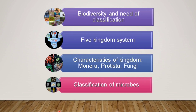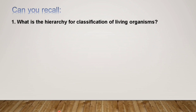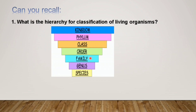Before starting with the actual topic, let us first recall some things. The first question is: what is the hierarchy for classification of living organisms? The hierarchy has kingdom at the topmost level, then phylum, then class, next is order, then family, genus, and last is species. These are the seven steps or hierarchy for classification of living organisms.